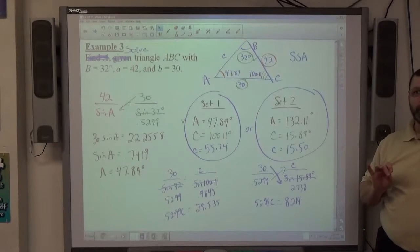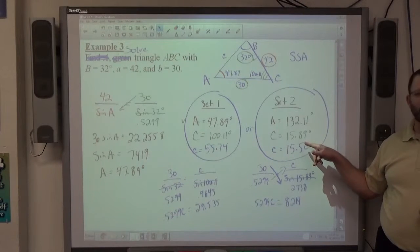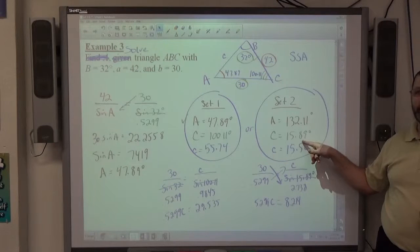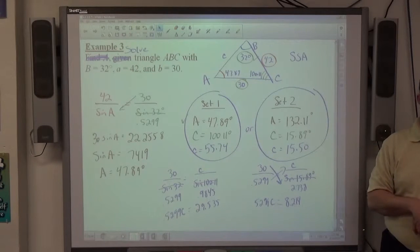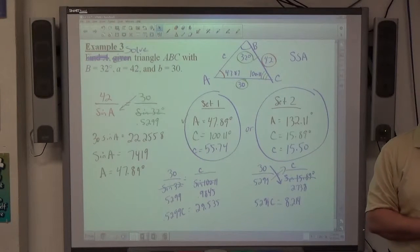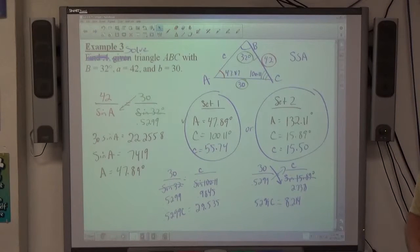Again, the only stipulation that could be weird about it is sometimes step two doesn't exist because C ends up being a negative angle. Throw it out at that point. It will happen in your homework at least once, maybe twice. So watch out for that one scenario. That has not been handled specifically in an example problem today.